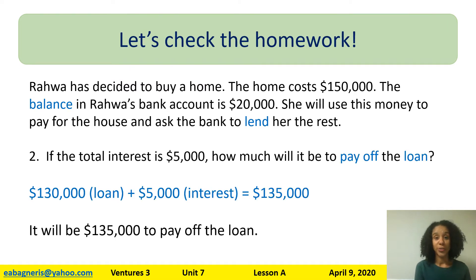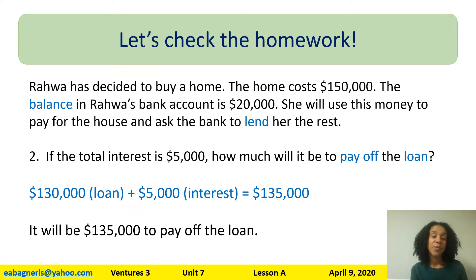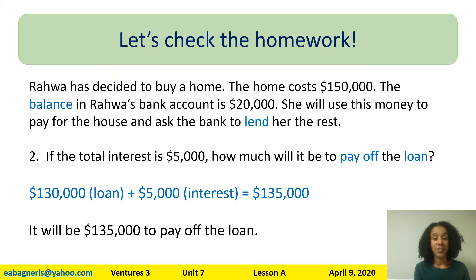Now let's look at question two. If the total interest is $5,000, how much will it be to pay off the loan? The bank has told Rawa that to borrow $130,000 she will have to pay $5,000 in interest. So the loan is $130,000 plus $5,000 in interest. In total, she will have to pay $135,000 to pay off the loan.